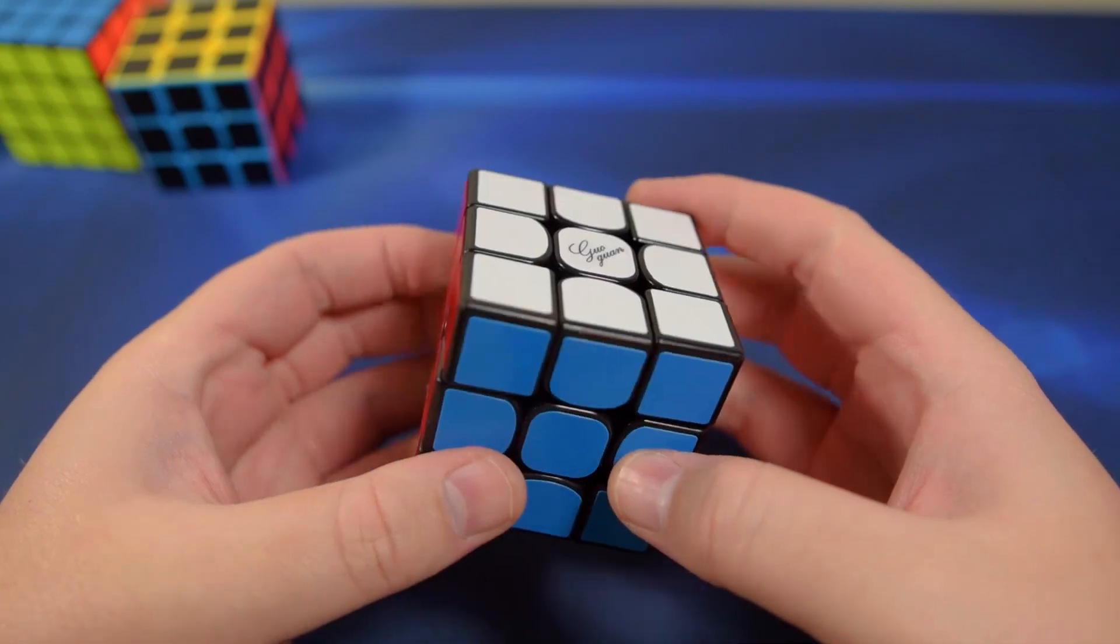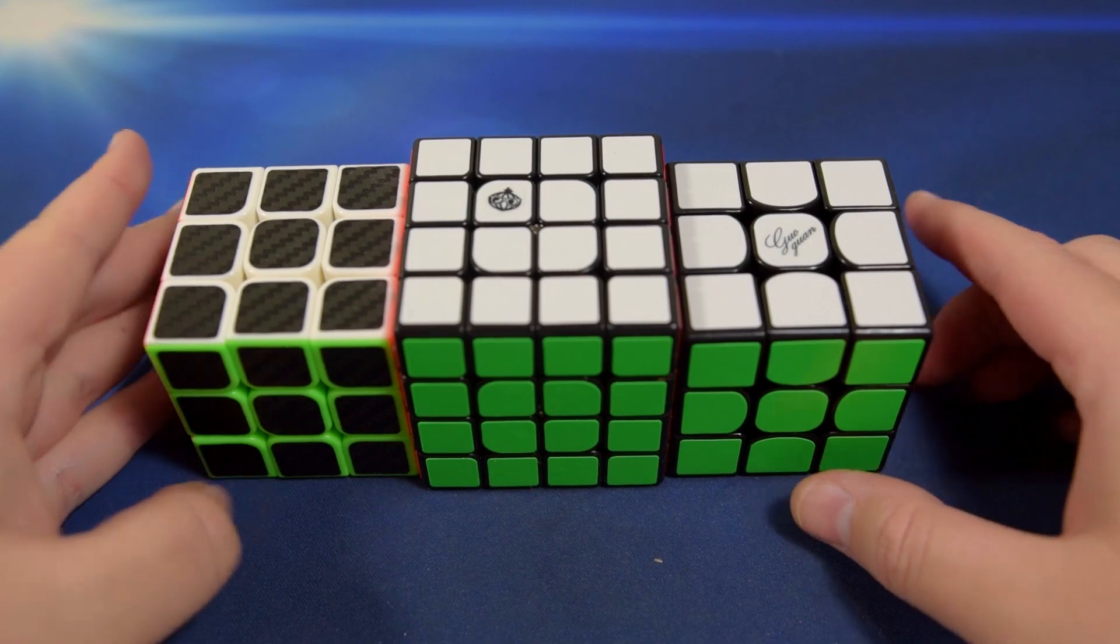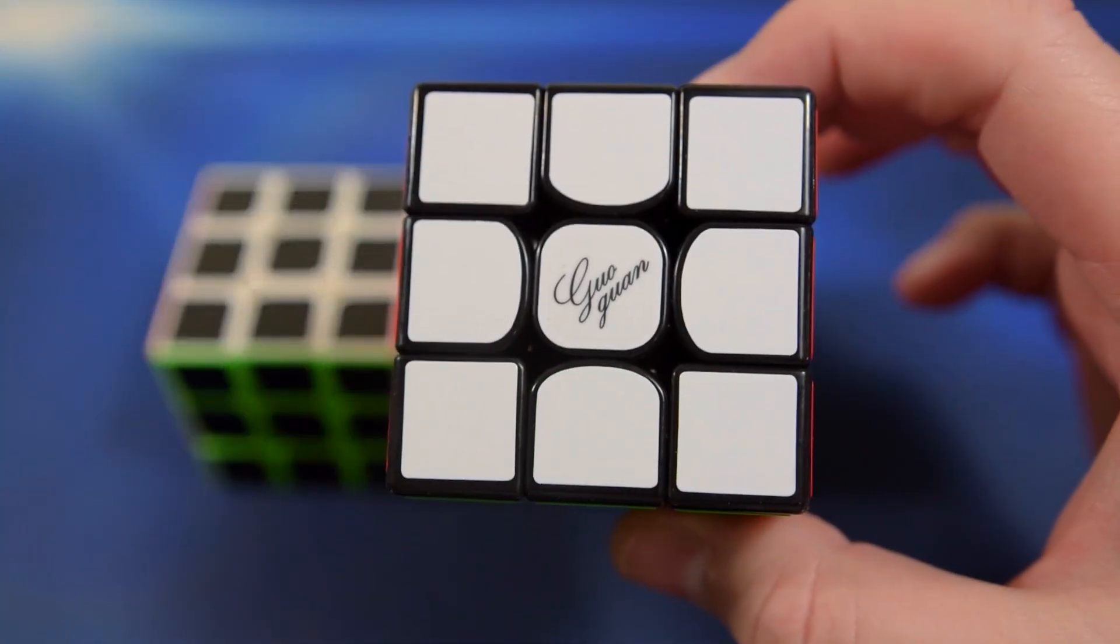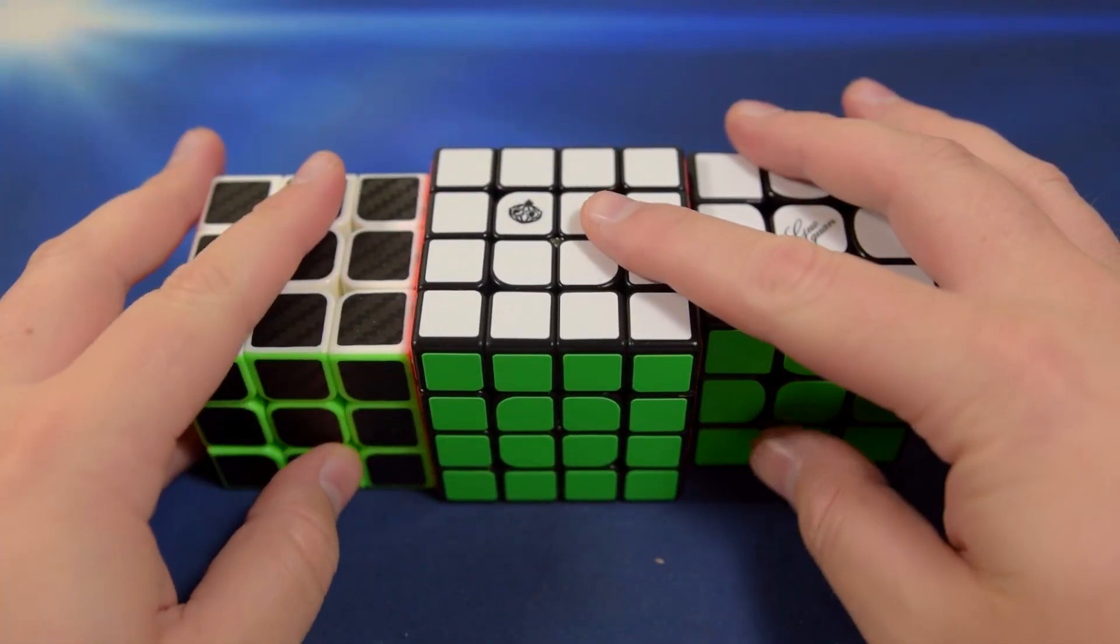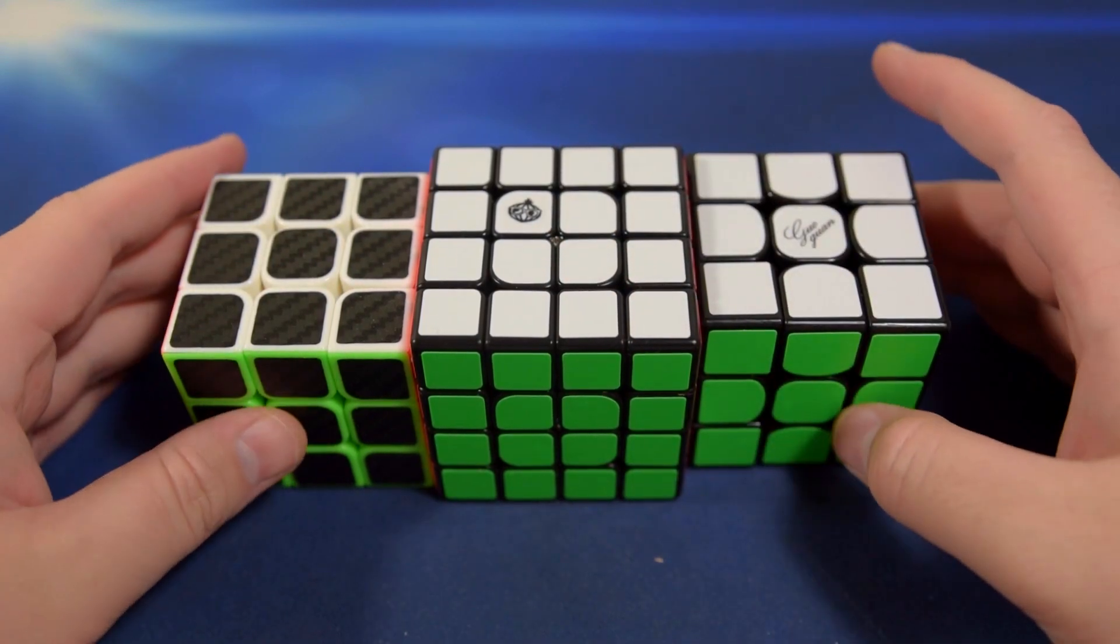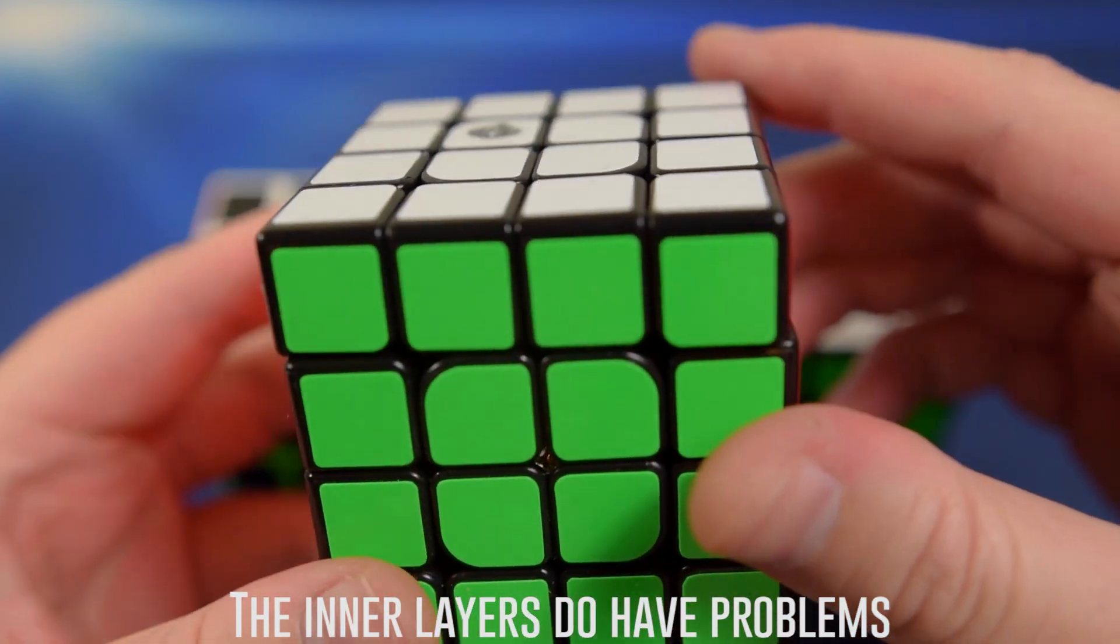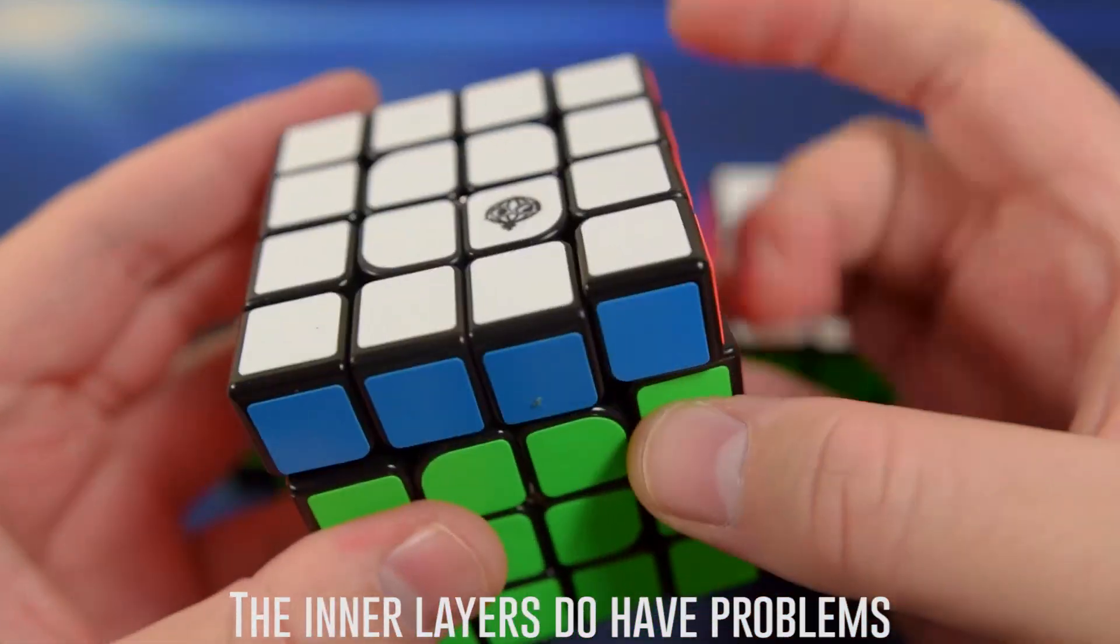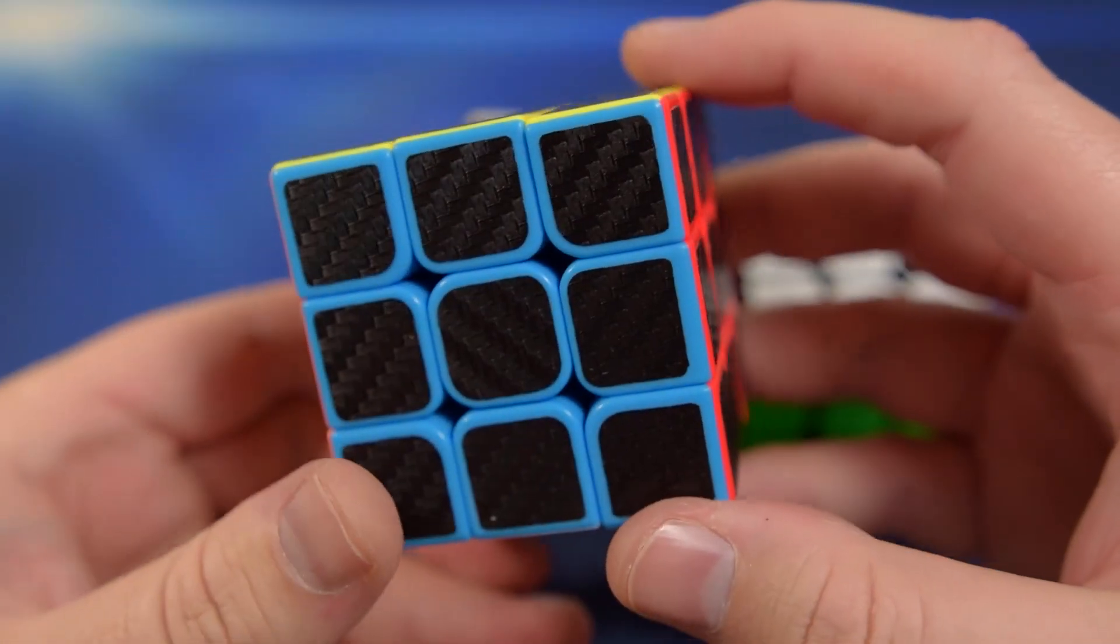All right guys, well I really appreciate you watching. These puzzles are pretty amazing, really. I know that the GuoGuan is actually on Cubes for Speed for $15. And now I don't know if these other two are up yet, but when they are, this actually surprised me. I was told that the MeiYu was going to have problems with this first run of puzzles, but this puzzle turns surprisingly well.